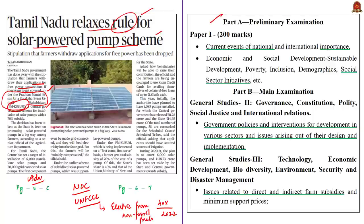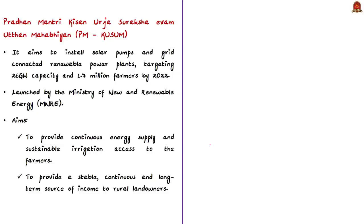The syllabus relevant to this news article is highlighted here for your reference. The PM Kusum scheme aims to install solar pumps and grid-connected renewable power plants targeting 26 gigawatts of capacity and 1.7 million farmers by 2022. This scheme was launched by the Ministry of New and Renewable Energy. It aims to provide continuous energy supply and sustainable irrigation access to farmers, and also a stable, continuous, and long-term source of income to rural landowners.